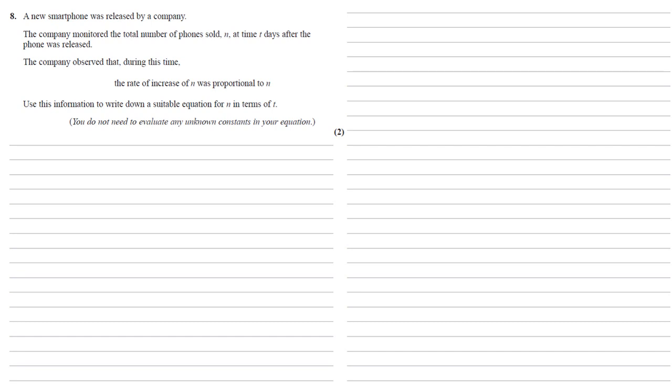We need to use this information to write down a suitable equation for n in terms of t. We don't need to evaluate any unknown constants in the equation.